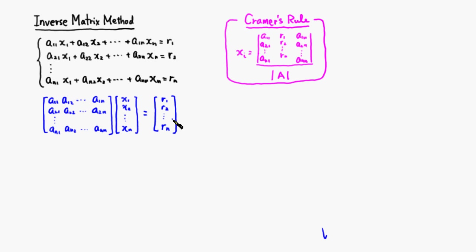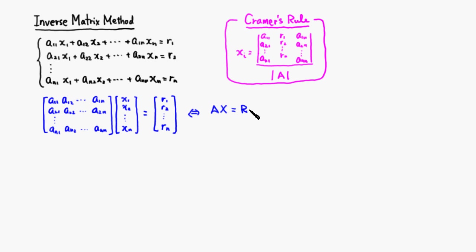To make the notation simpler, I'm going to use A for the coefficient matrix, capital X for the variable matrix, and capital R for the right-hand side.